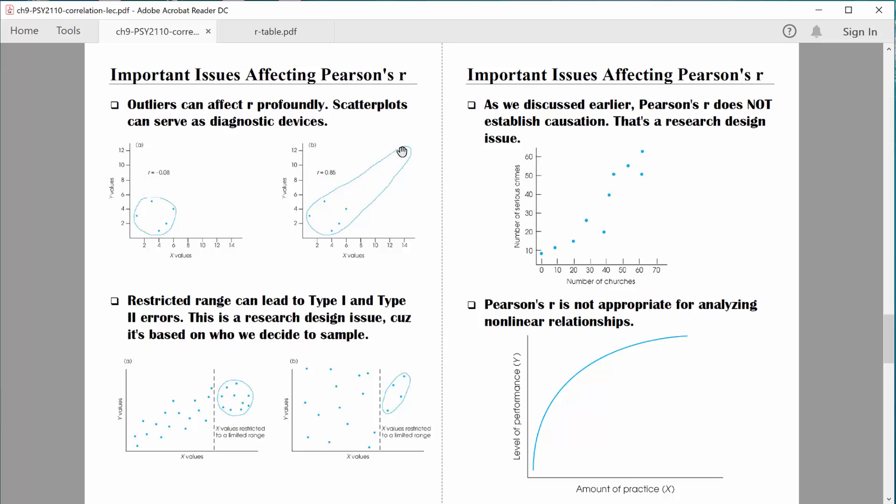Now look at what happens right over here. All I do is add one more data point. When we add that one data point now it looks like there is a relationship between the variables. You can see this one data point is having quite an influence, more of an influence than one data point really should have. And when we crunch those numbers now it shows a correlation coefficient which is very strong, a positive 0.85. So scatter plots serve as very good diagnostic tools. If we were to create a scatter plot and take a look we would know that we have an outlier and that one outlier is going to have a very strong influence on our results.